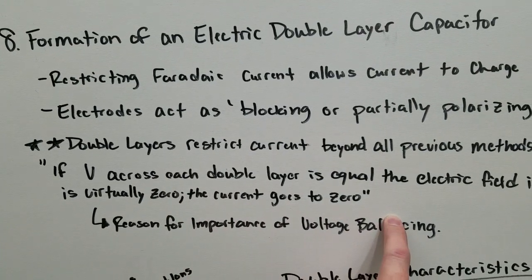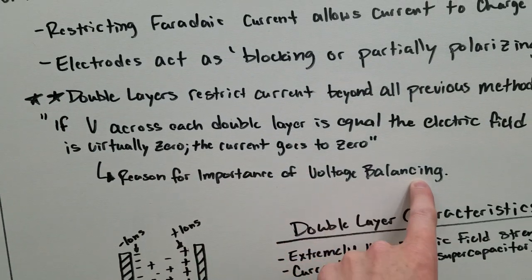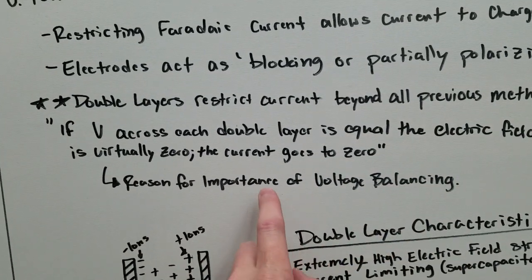And then, if that happens, the current goes to zero. This is one reason, I believe, why Stan talks about the importance of voltage balancing in the technical brief.